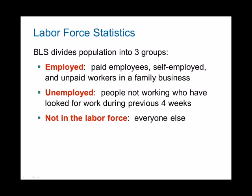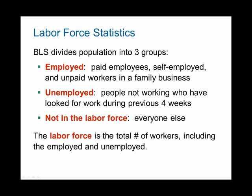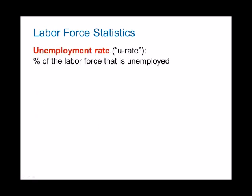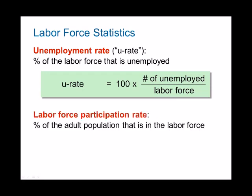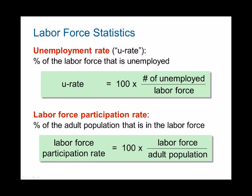Everyone else — if you're not employed or unemployed — is considered not in the labor force. The labor force in the US is the total number of workers, which is the sum of employed and unemployed workers. The unemployment rate is the percentage of the labor force that is unemployed. And the labor force participation rate is the percentage of adults that are in the labor force.